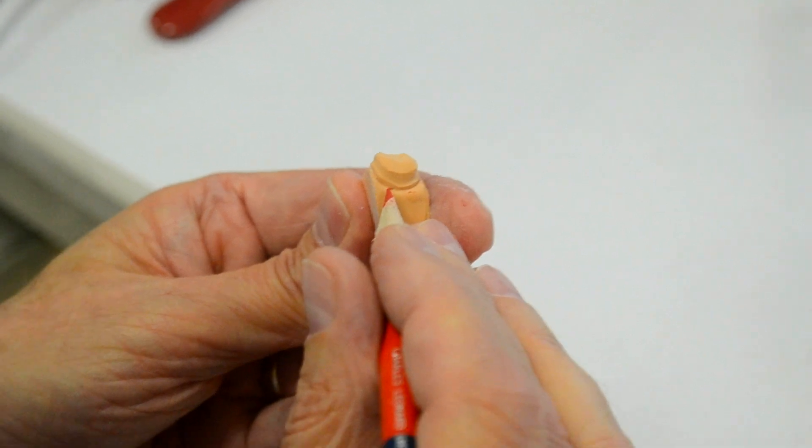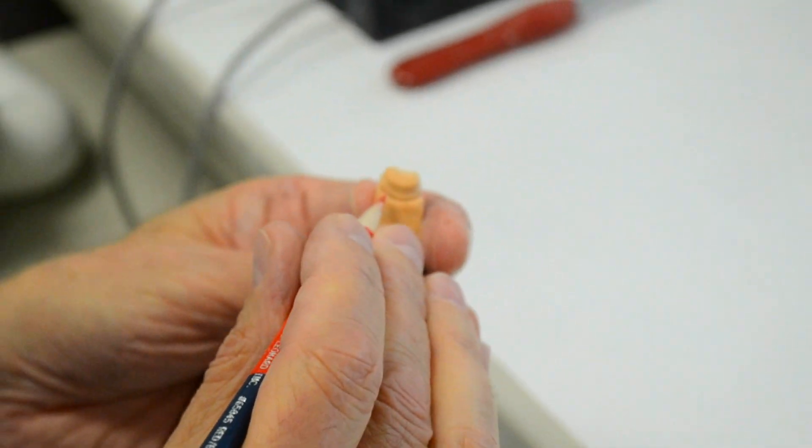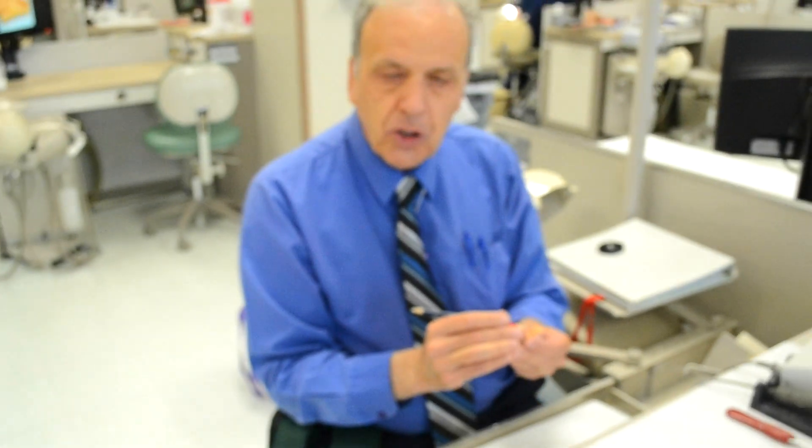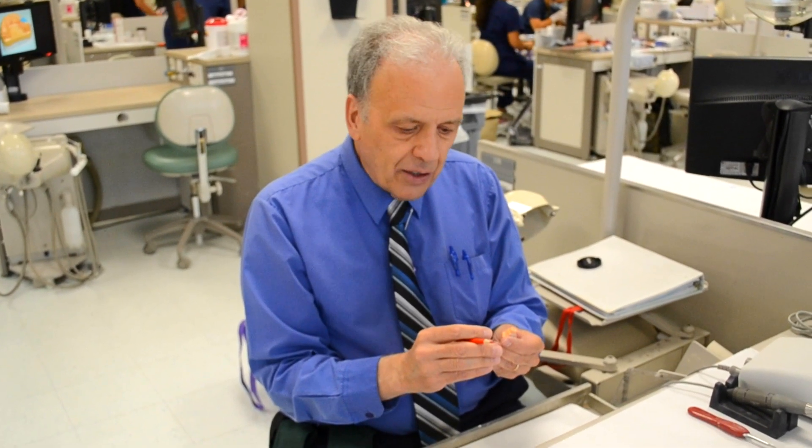So the process called die trimming is really a rather simple process that takes just a few minutes to accomplish. Once performed correctly, as I said before, the finish line on the die will be accessible, and waxing and trimming will be far easier to accomplish. So without any further ado, let's go to die trimming.